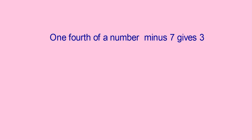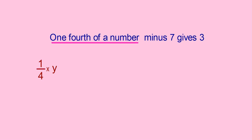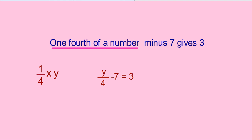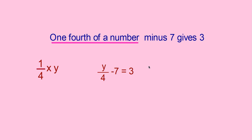Look at another sentence: 1 fourth of a number minus 7 gives 3. The number is not given, so you can write it as y. 1 fourth of the number y is y by 4. Minus 7 gives 3, so the required equation is y by 4 minus 7 is equal to 3.